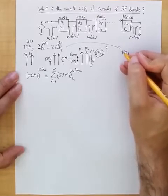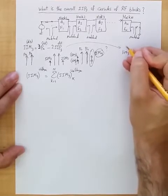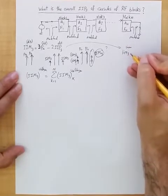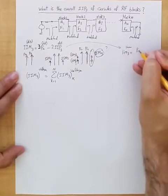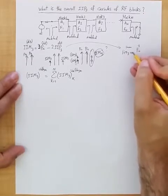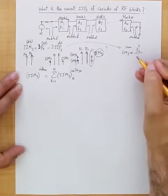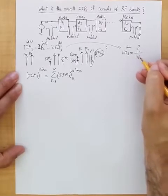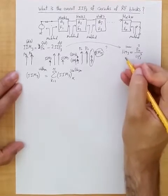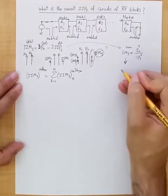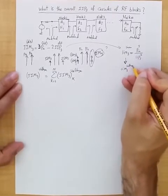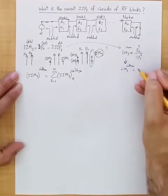So this one translates to IIM3 in power, linear, equal to input power to power 3 divided by IIP3 to power 2. So from this, we get IIM3 in voltage is this.